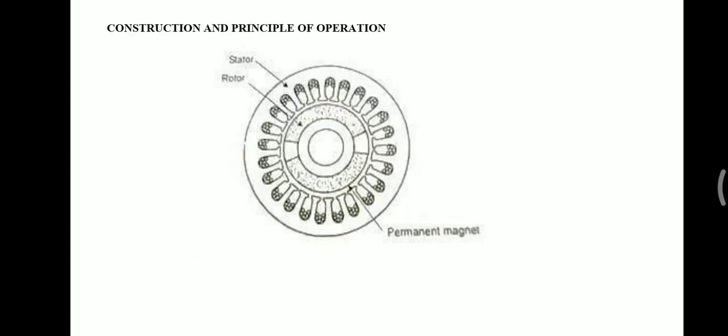Armature windings are generally double layer and lap wound. Individual coils are connected together to form phase groups. Phase groups are connected together in series or parallel combinations to form star, delta, two-phase, or single windings. AC windings are generally short-pitched to reduce harmonic voltage generated in the windings.